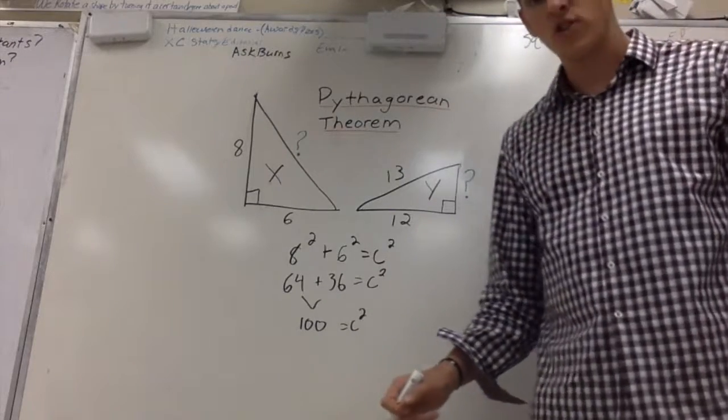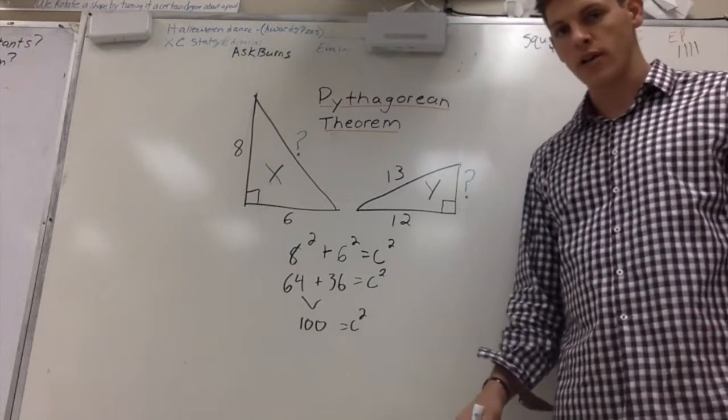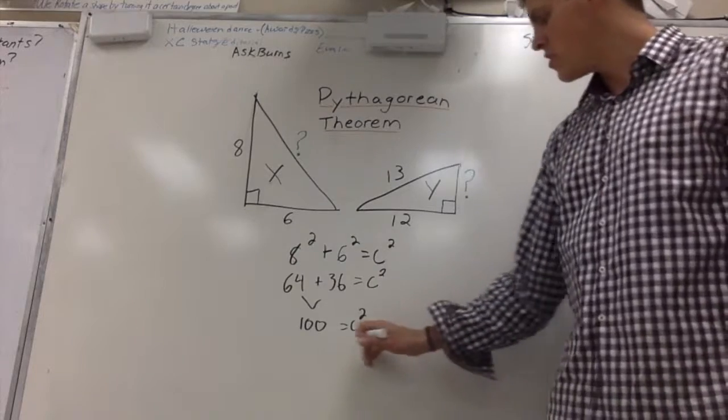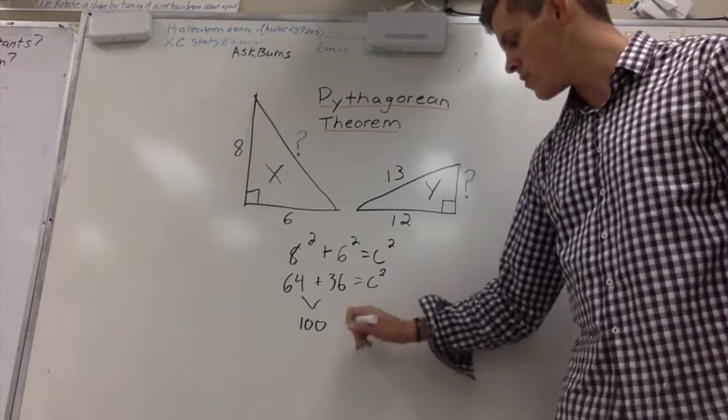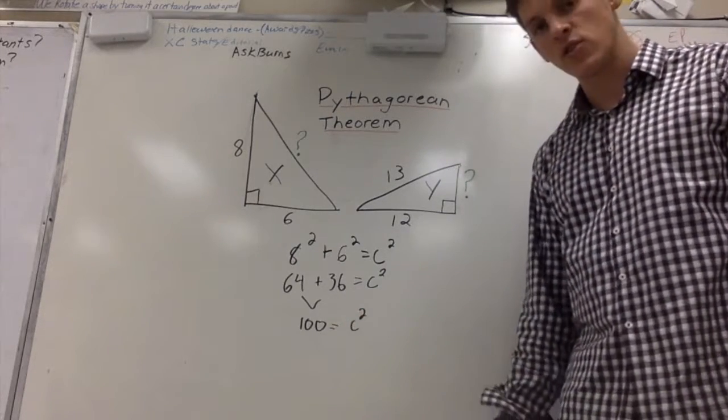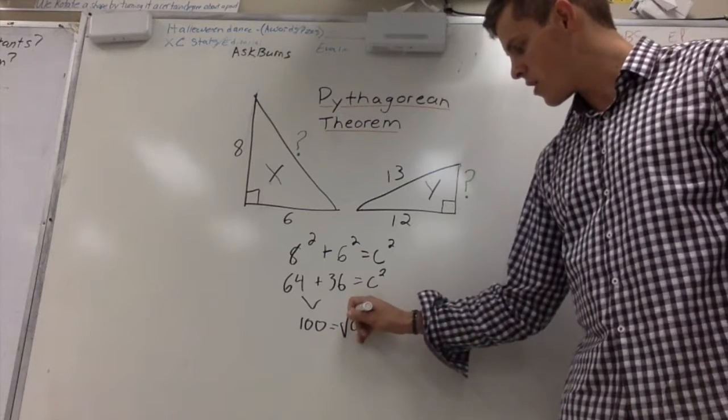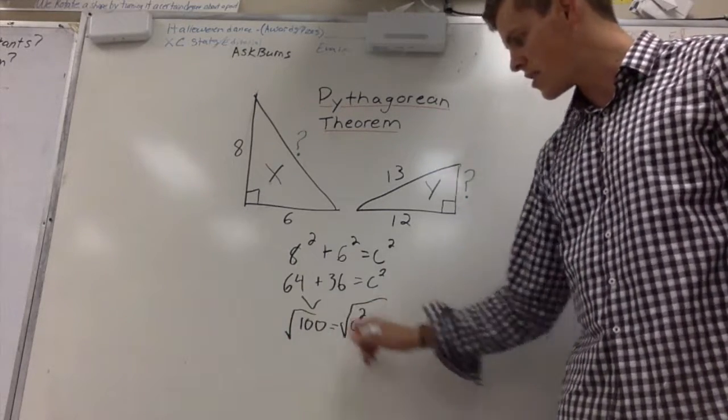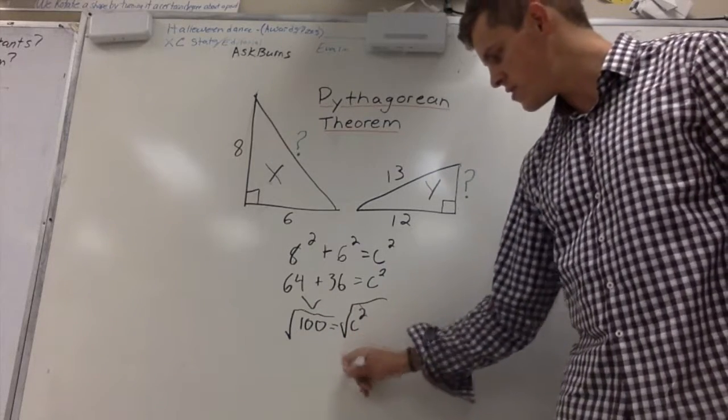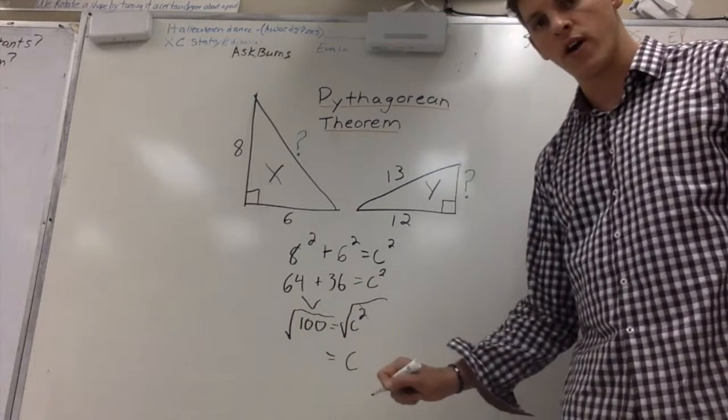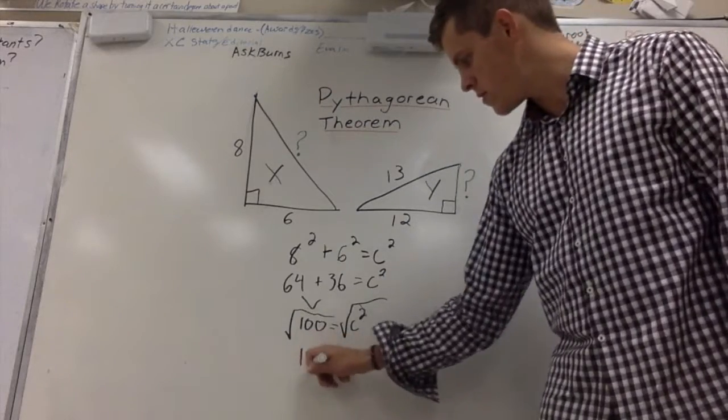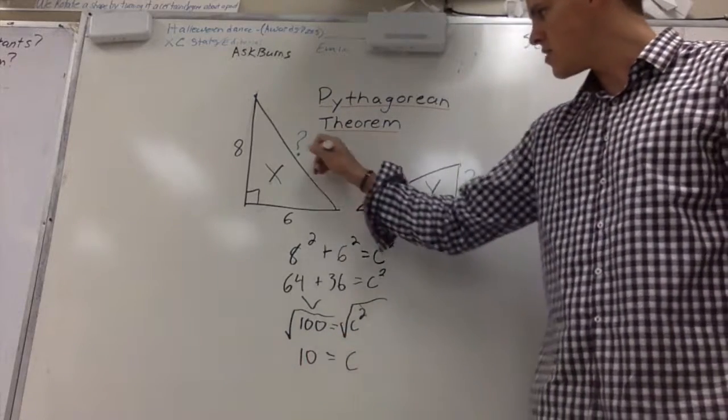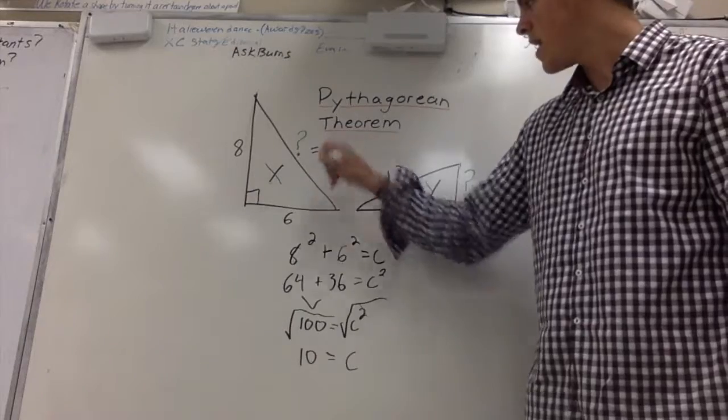Now, the question is, what is the square root of C squared, which is C? If we take the square root of C squared, and we take the square root of the other side, we now have C equals, and the square root of 100 is 10. In this case, this is going to equal 10.